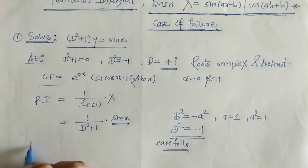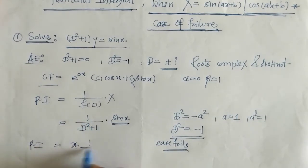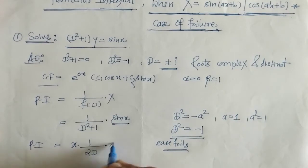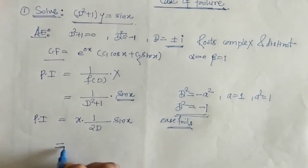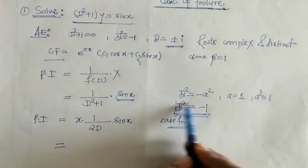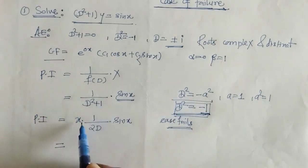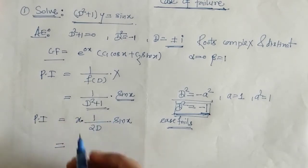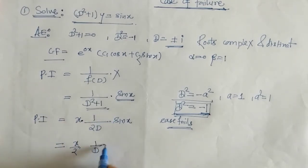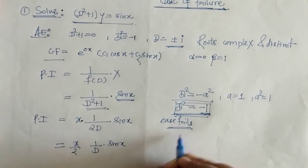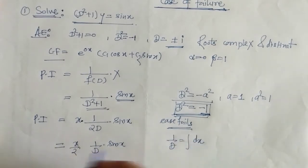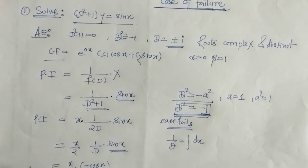At that time we have to multiply by x and take the derivative of f(D). The derivative of f(D) gives us 2D, and sin x stays as it is. Now 1/D means integration with respect to x. The integration of sin x is minus cos x. So this is the PI.